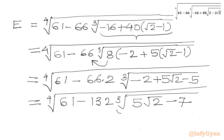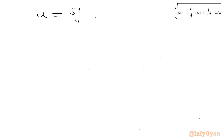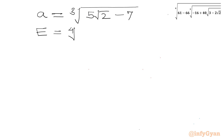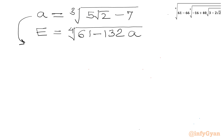Now let A = ∛(5√2 − 7), so our expression becomes E = 4th root of (61 − 132A). To find A, I cube both sides: A³ = 5√2 − 7.